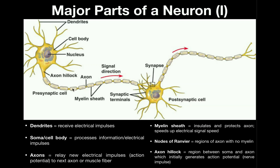The regions between the myelin sheaths — where you don't see any myelination — are called nodes of Ranvier. A node of Ranvier is a region of the axon with no myelin, meaning it sits between myelin sheaths.